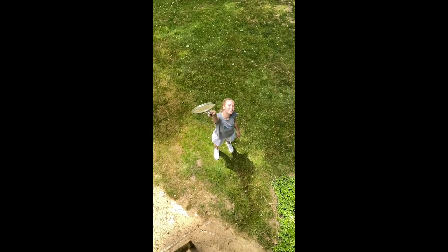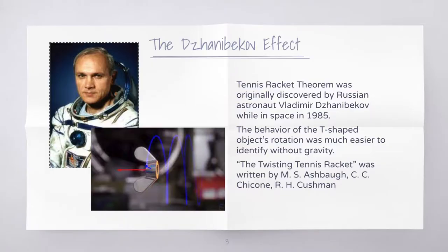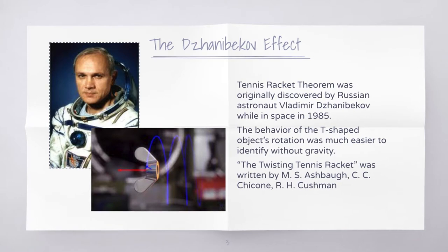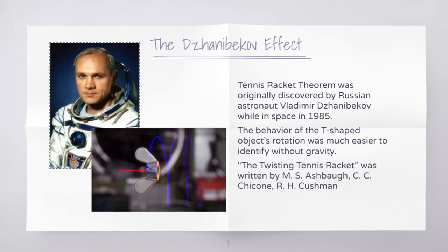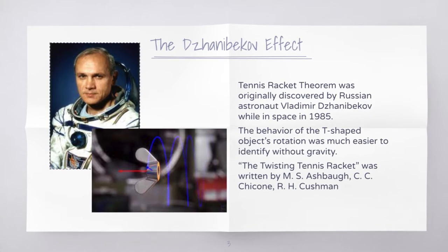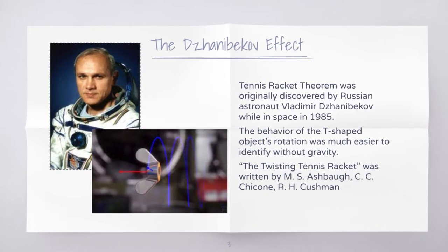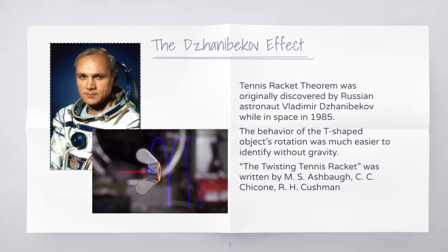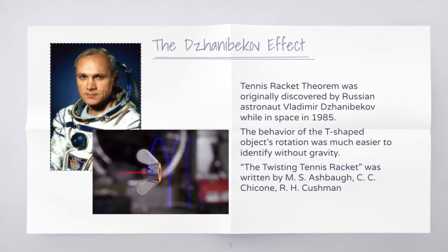Now that we've shown what Tennis Racket Theorem looks like, there are a lot of things we need to understand. We can start by talking a little bit about the historical background of the theorem. Tennis Racket Theorem was a result of classical mechanics originally discovered by Vladimir Janabekov, a Russian astronaut who discovered the theorem while in space in 1985.